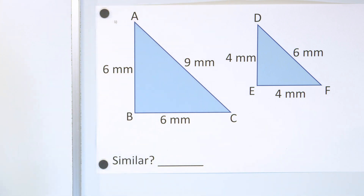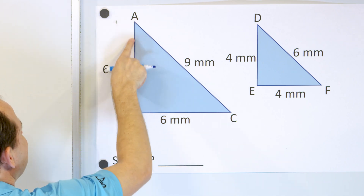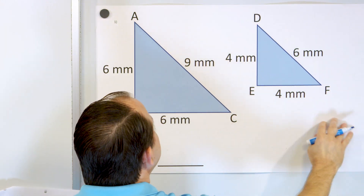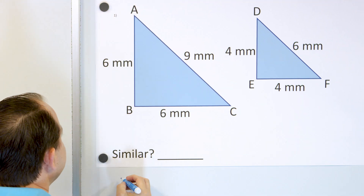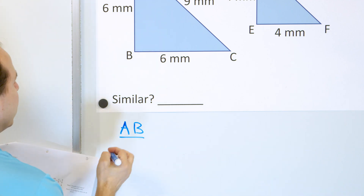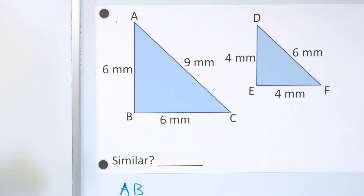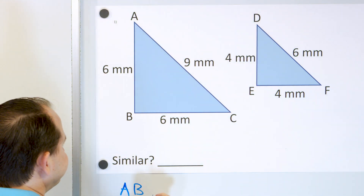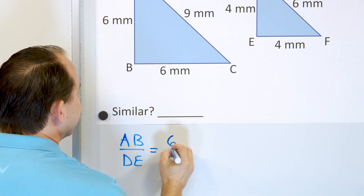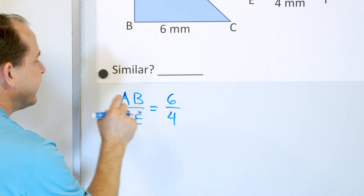Let's see if these figures are similar. We look at side AB and compare it to the corresponding side DE in the other figure, forming the ratio AB over DE. The length of AB is 6, so we put 6 on top, and the length of DE is 4. This forms the ratio 6 to 4.